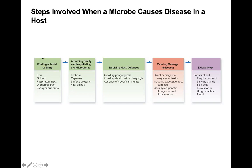The second step is attaching firmly and negotiating the microbiome. This will be through virulence factors called fimbriae, capsules, surface proteins, and viral spikes.